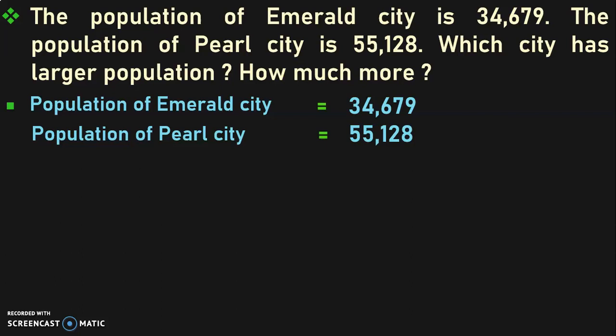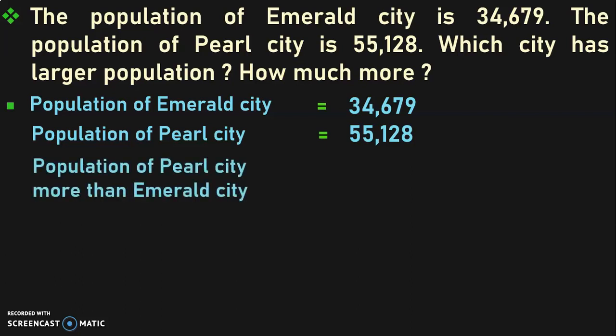Both of these are 5-digit numbers, so we look at the leftmost place value, which is the 10,000s place. We have 3 and 5, and since 5 is greater than 3, Pearl City with a population of 55,128 is greater than the population of Emerald City. Once we know which has a larger population, we find out how much more. Population of Pearl City more than Emerald City is equal to population of Pearl City minus population of Emerald City.